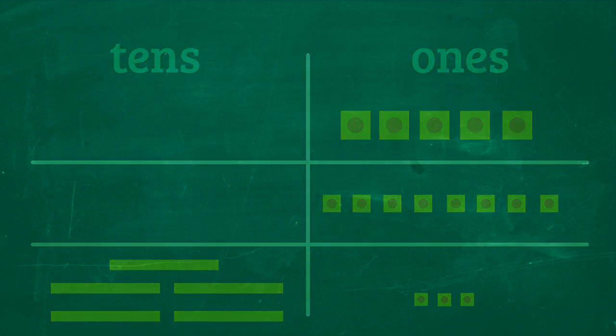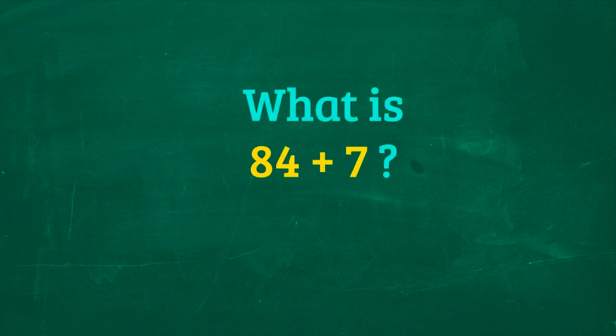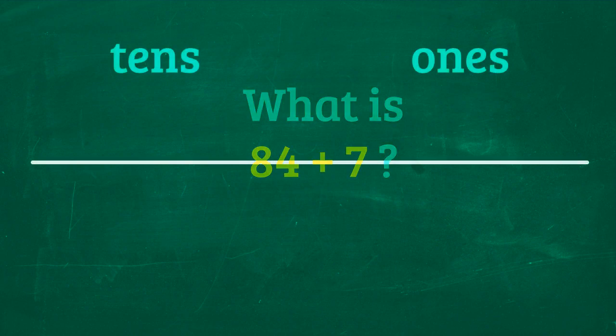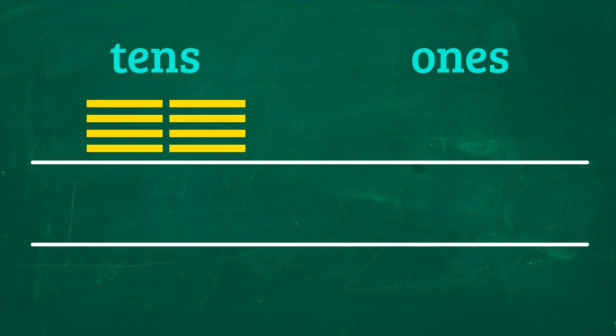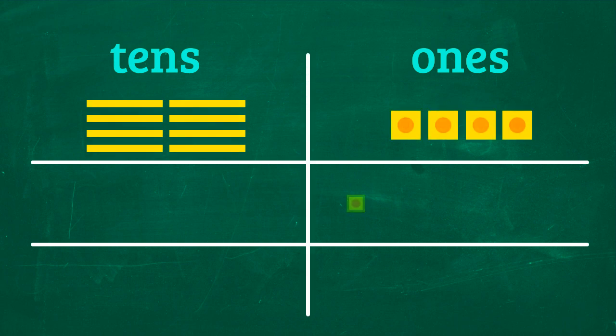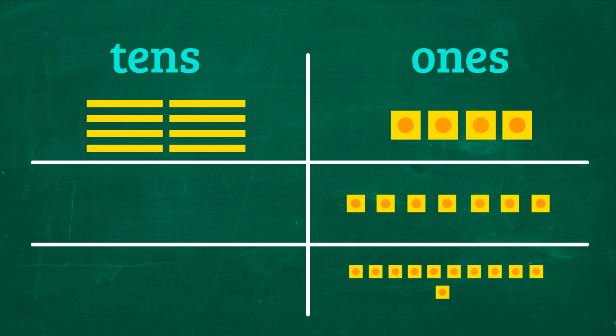Let's try another equation. What is 84 plus 7? Let's put 8 rods on the tens column and 4 units on the ones. Then we'll put 7 units underneath the ones column. Now add the ones together and we get 11 ones. What do we have to do next?